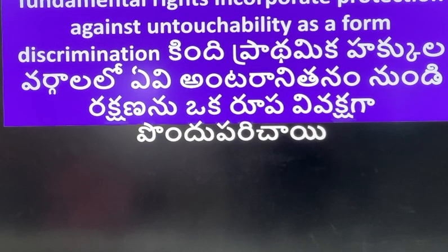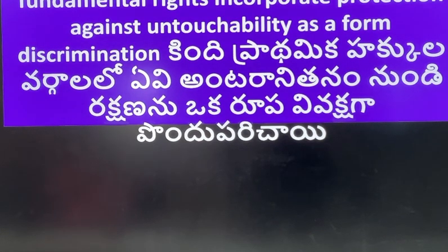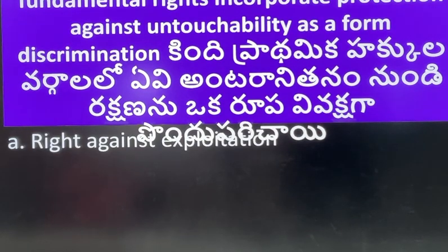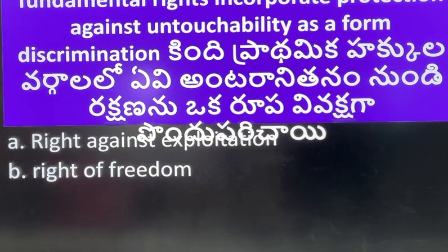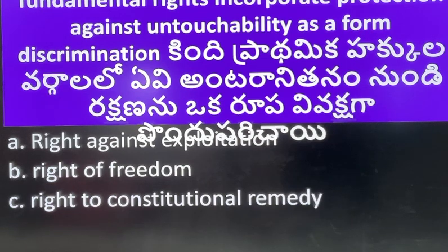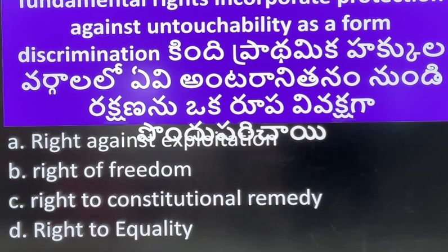Next one: which category of fundamental rights incorporates protection against untouchability as a form of discrimination? A. Right Against Exploitation. B. Right of Freedom. C. Right to Constitutional Remedy. D. Right to Equality. The answer is D, Right to Equality.